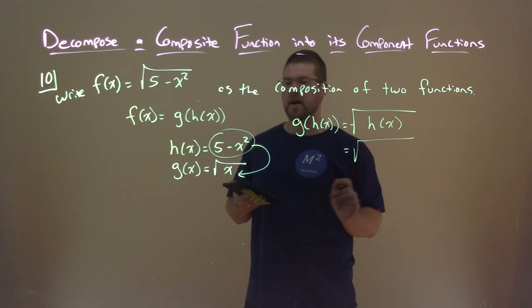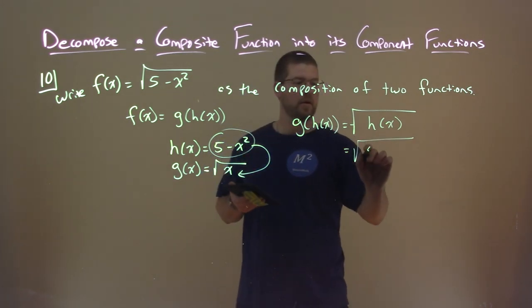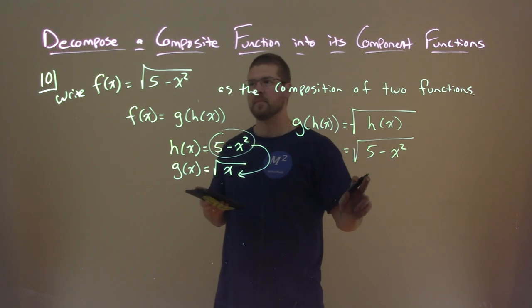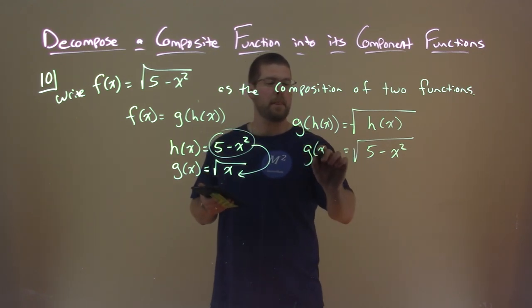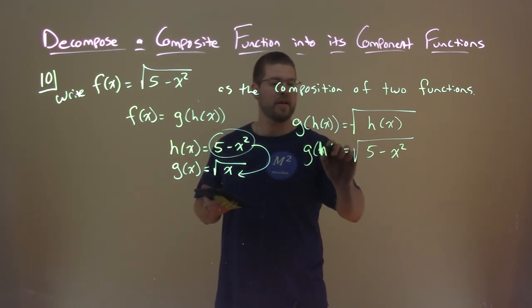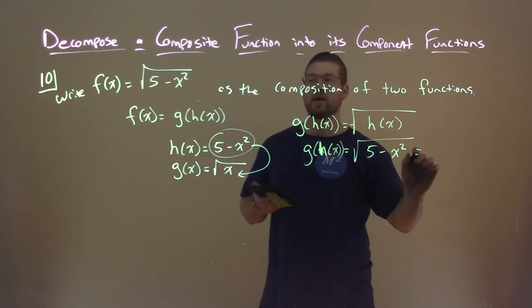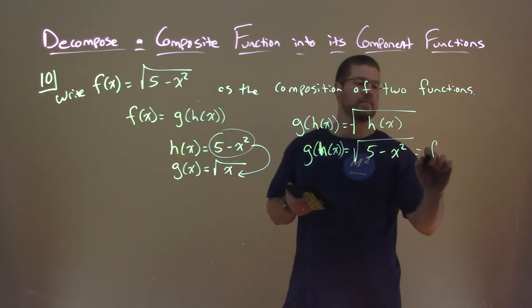Well, what's h of x? Well you said it was 5 minus x squared. Is that g of h of x here? Is that equal to what we said f of x was? And that is correct.